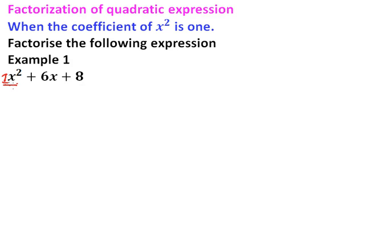So we refer to this as coefficient of x squared, that is 1. This is the coefficient of x, and this is a constant. So we can rewrite our expression x² + 6x + 8. Now to be able to factorize or to introduce a bracket...